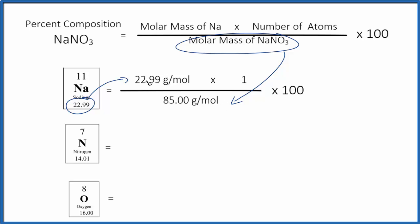So what we're going to do is multiply 22.99 times one, divide by 85 grams per mole—they cancel out. We multiply that number by 100 to get a percent, we get 27.05 percent, and that's the mass of the sodium.